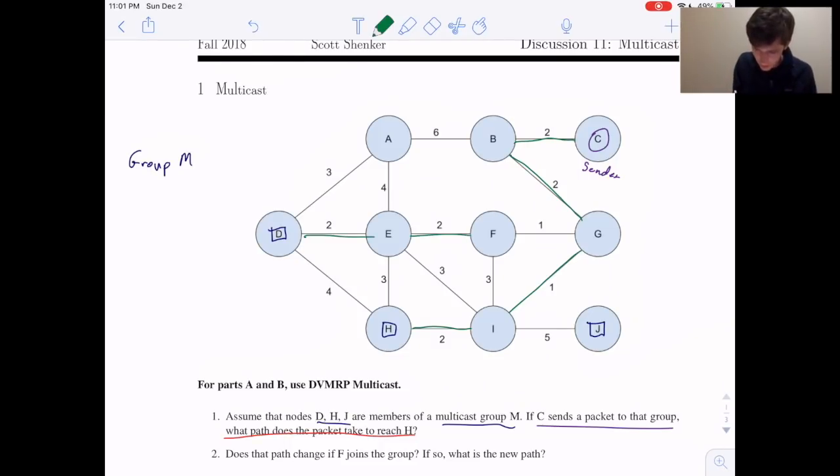So from D, E, F, like that. So the path that the packet from C to H would take would just be that exact path, the shortest path from H to C. So C to B, B to G, G to I, and then I to H.